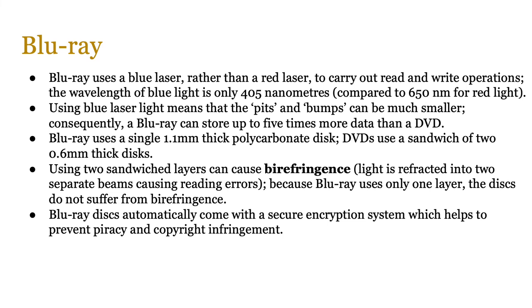Blu-ray uses a single 1.1 mm thick polycarbonate disc, while DVDs use a sandwich of two 0.6 mm thick discs, ending up roughly the same overall size. Using two sandwich layers can cause birefringence, where light is refracted into two separate beams causing reading errors. Because Blu-ray uses only one layer, its discs do not suffer from this effect. Blu-rays also automatically come with a secure encryption system which helps prevent piracy and copyright infringement — Sony is credited with this because they wanted their PlayStation discs, movies, and music to be secure from illegal copying. It is much tougher to burn Blu-ray discs than CDs and DVDs.